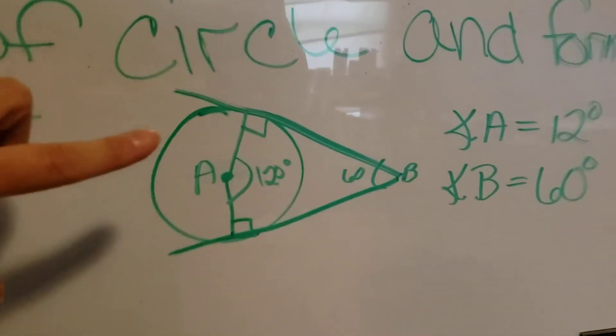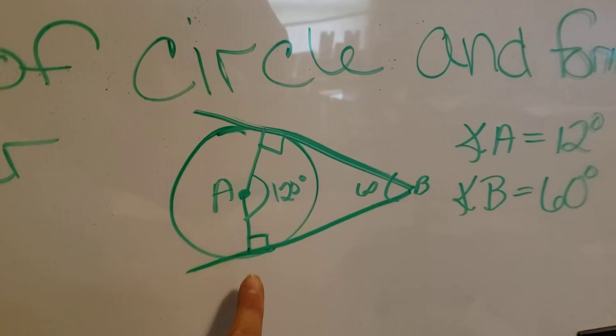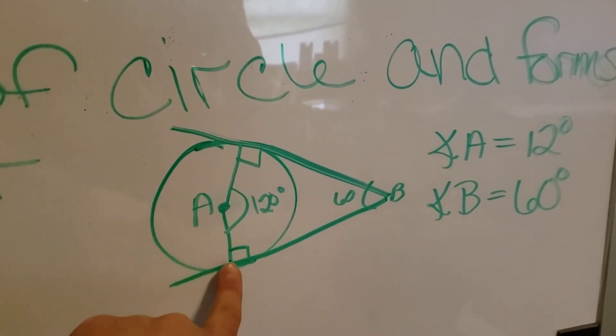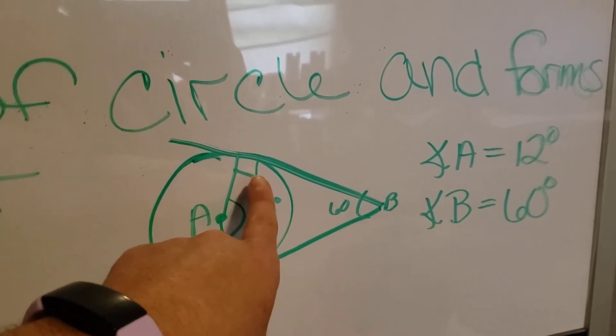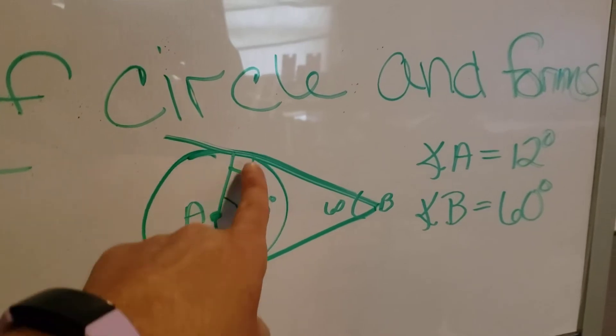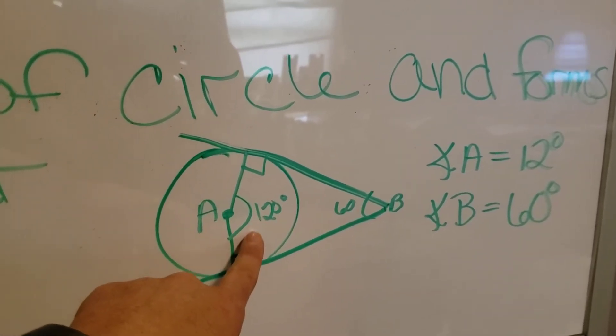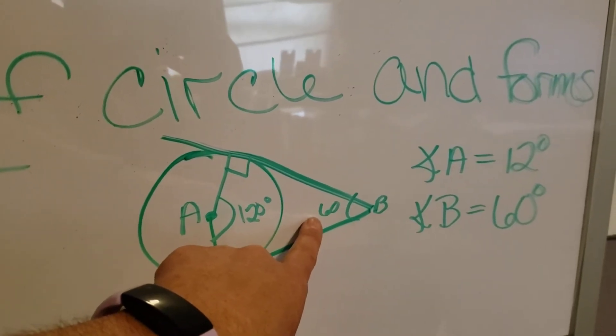So this is my circle. These lines are tangents and from the center to the tangent that line with the radius forms 90 degree angles. This inner angle is 120 degrees which means this outer angle is half of that which is 60.